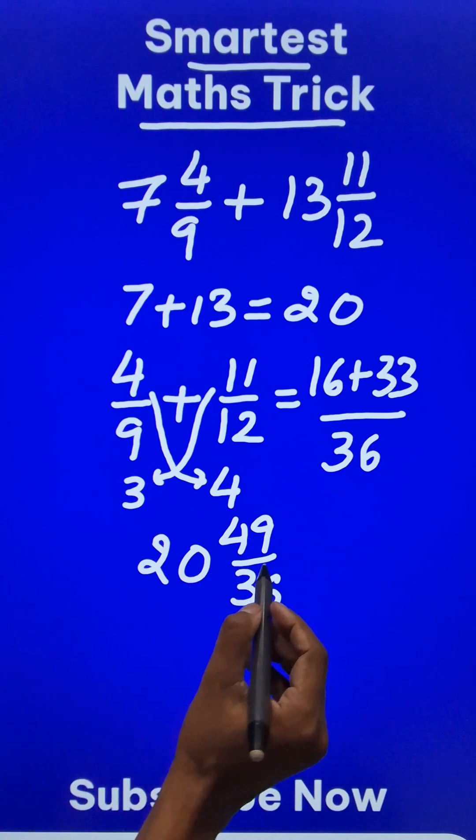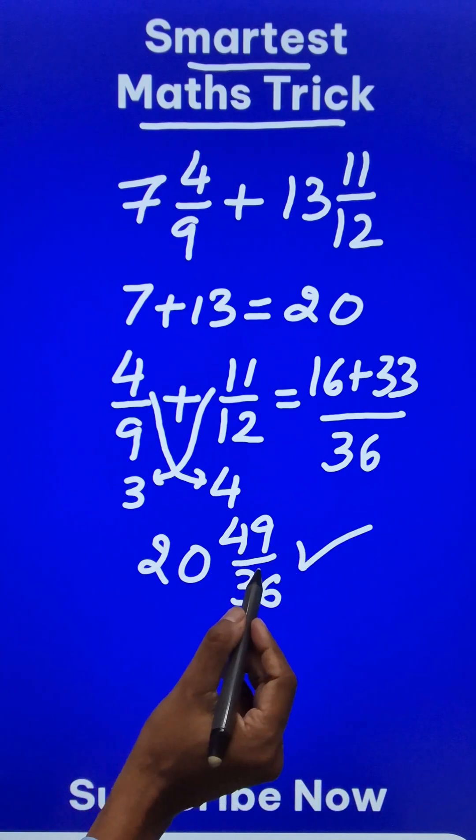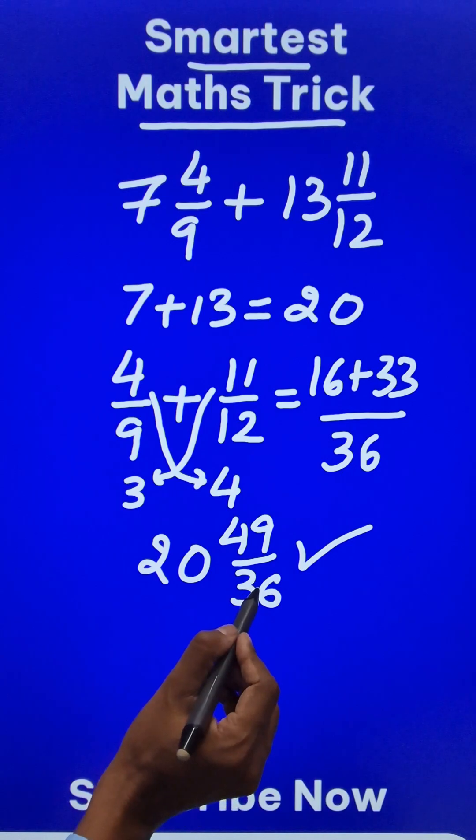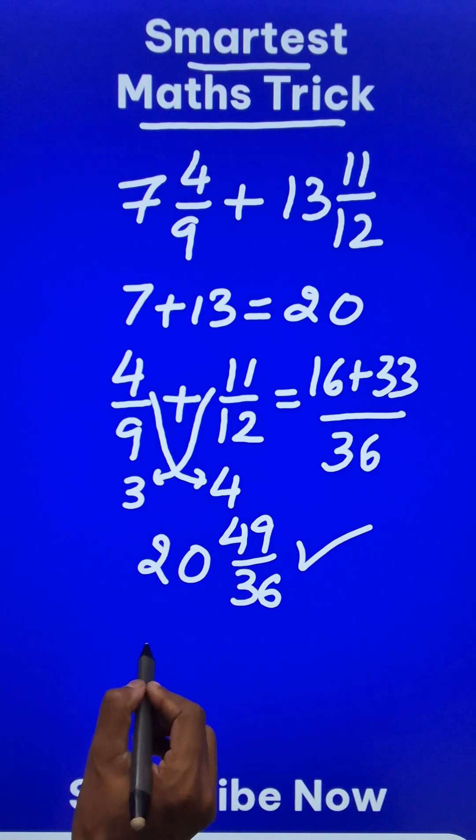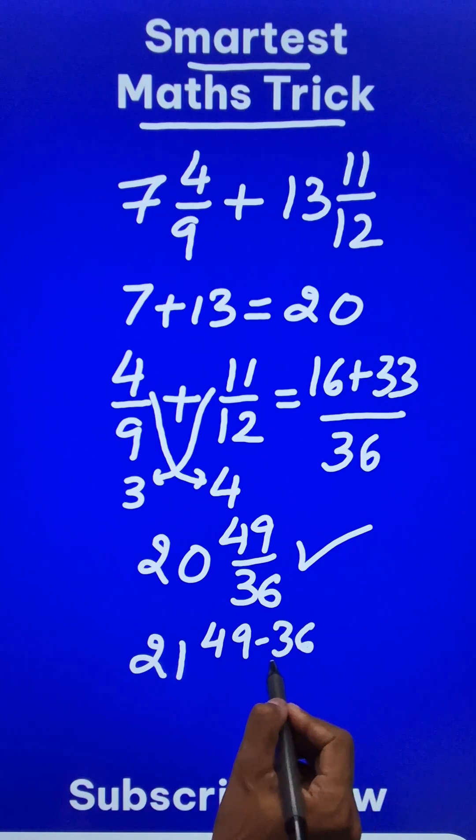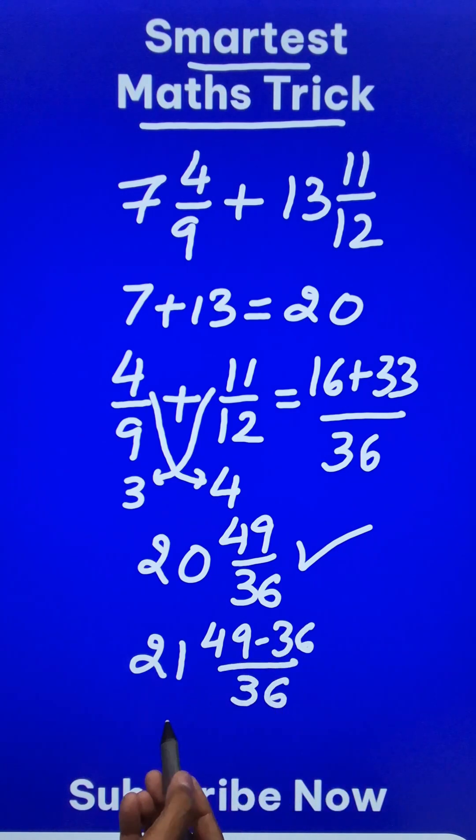But since 49/36 is an improper fraction, you have to divide 49 by 36. So the quotient will be 1 that gets added to 20. So 20 becomes 21 and then 49 minus 36 upon 36. That will be the fractional part.